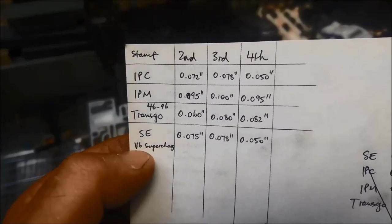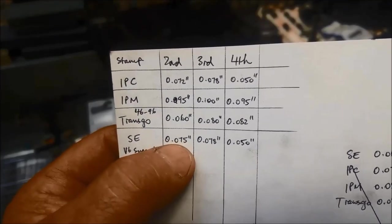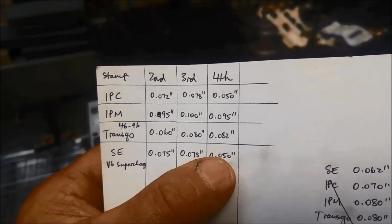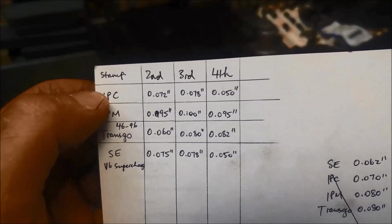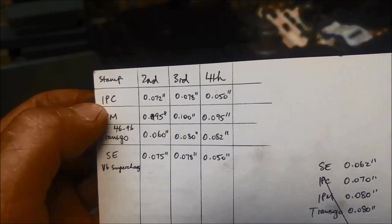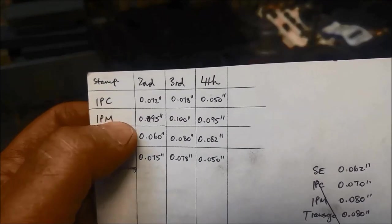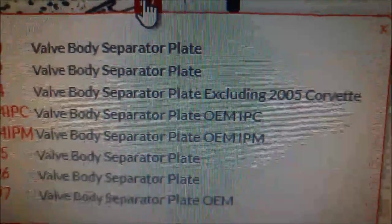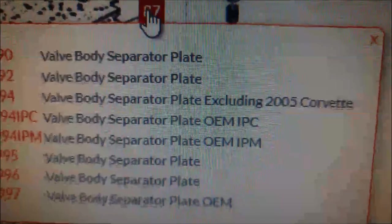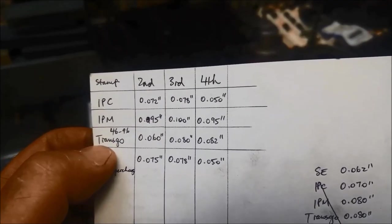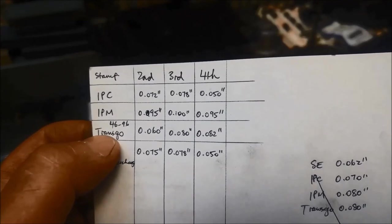The SE, which is the one that we've got. We've got 2nd, which is say 75,000, 70,000, 78,000 and 50,000. And you can buy these other separator plates, which they have an IPC or an IPM stamped on it.